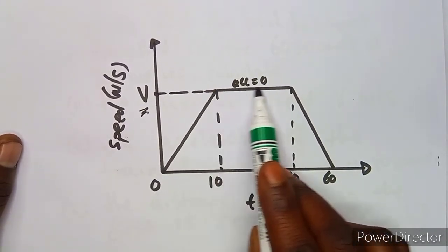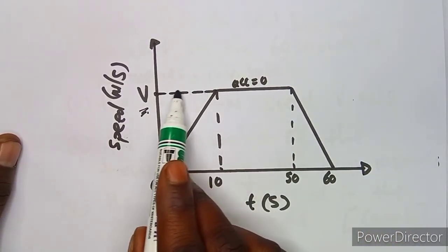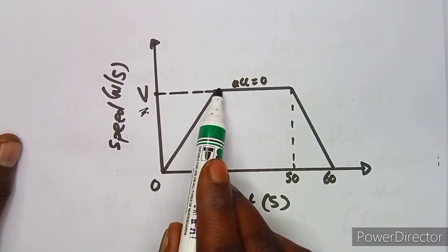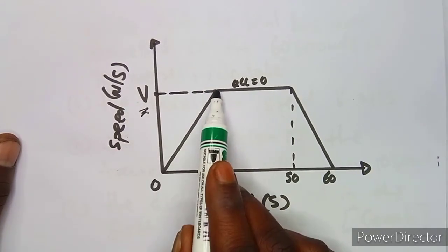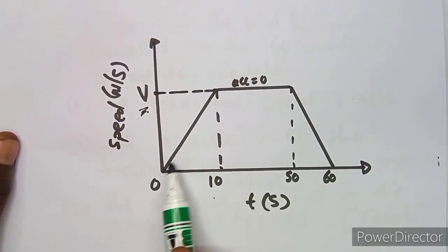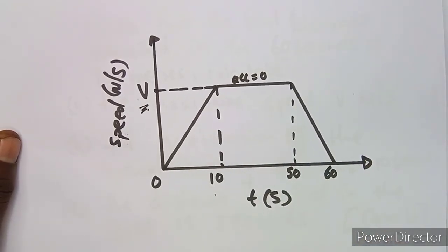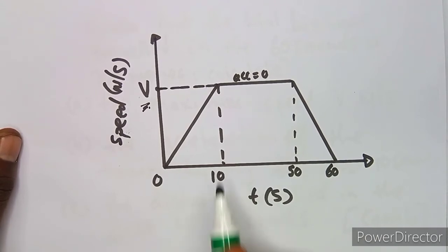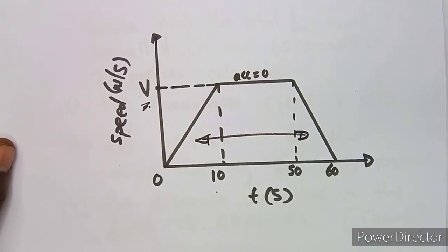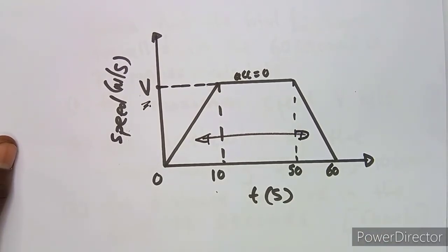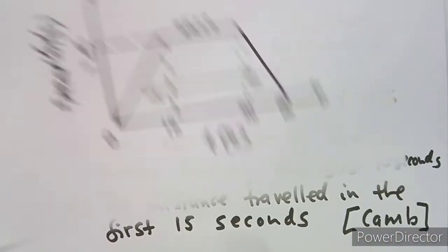The area under the graph — this continuous part is your graph. These lines are just indicating points: at this line it's equivalent to v, at this point it's 10. Your graph is the continuous path. So the distance is going to be the total area of the figure you are given, which is a trapezium.